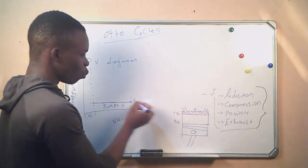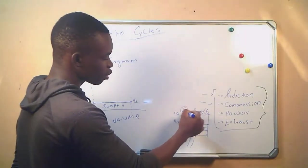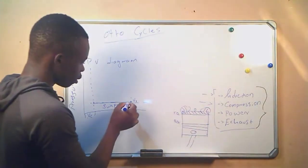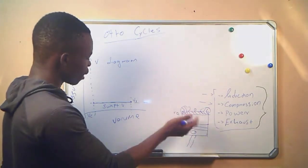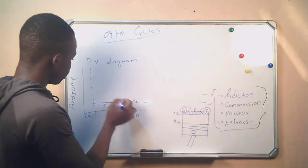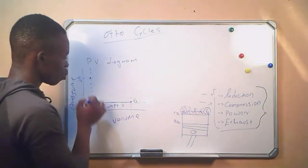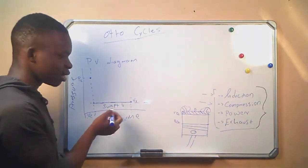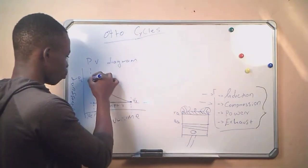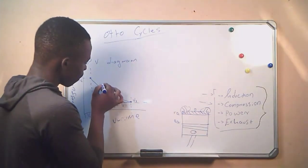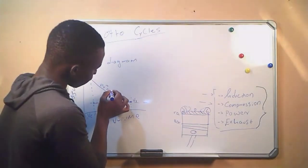Then we go to the compression. Now both valves are closed. The air-fuel mixture inside the cylinder is compressed adiabatically, and as a result the pressure will increase — this is pressure number two. The volume will decrease because it's a compression. We join these two points, and this process happens using the adiabatic law.